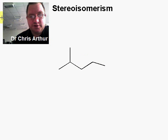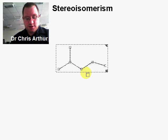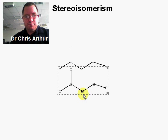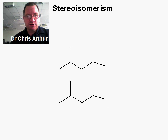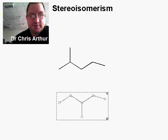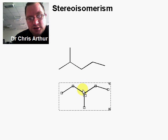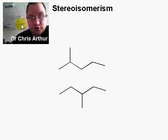So for instance this example here — the bond connectivity, so how these bonds are all joined up together, is different. So these are examples of structural isomers.